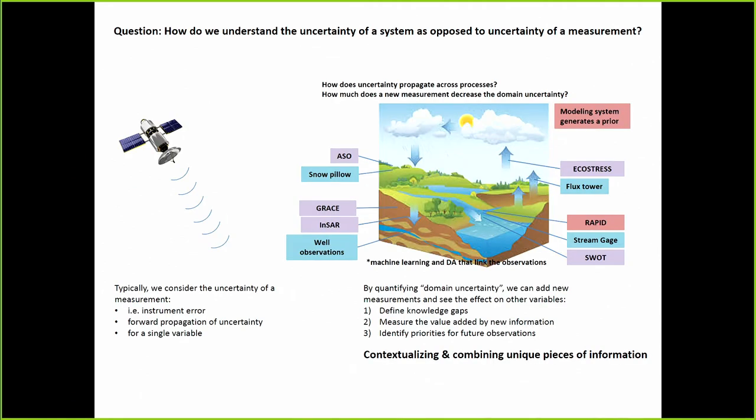I'm almost done here. One thing I wanted to talk about is the possibility of how do we understand the uncertainty of a system as opposed to the uncertainty of a measurement. Typically at NASA we're concerned with the left side - consider the uncertainty of a measurement, instrument error, full propagation uncertainty for a single variable. How do we do something? Or what are the sources of uncertainty? We should probably start thinking about things on the right side, which is how does uncertainty propagate across processes? How much does a new measurement decrease the general domain uncertainty?